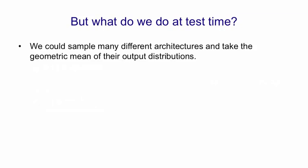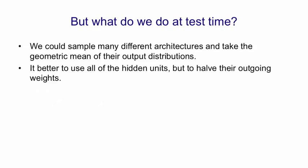The question still remains what we do at test time. So we could sample many of the architectures, maybe 100, and take the geometric mean of their output distributions. But that will be a lot of work. There's something much simpler we can do. We use all of the hidden units, but we halve their outgoing weights so they have the same expected effect as they did when we were sampling.